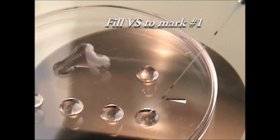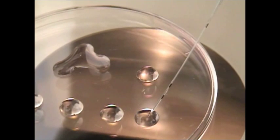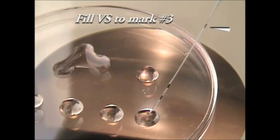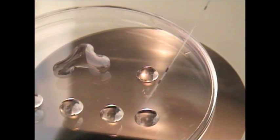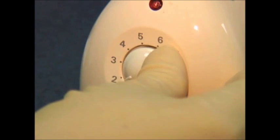Next, using the cryo tip, the vitrification solution is drawn up to mark one on the cryo tip. This is followed by loading of the embryos or the oocytes into the cryo tip. Next, the cryo tip is filled to mark three with the vitrification solution from drop four.